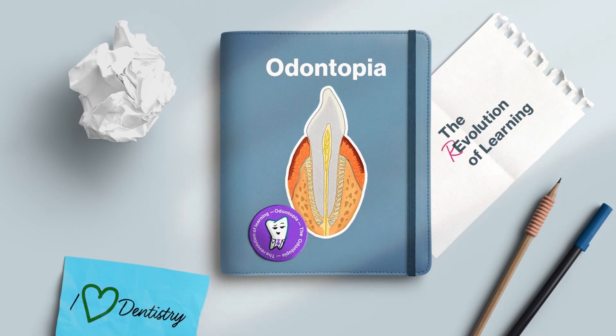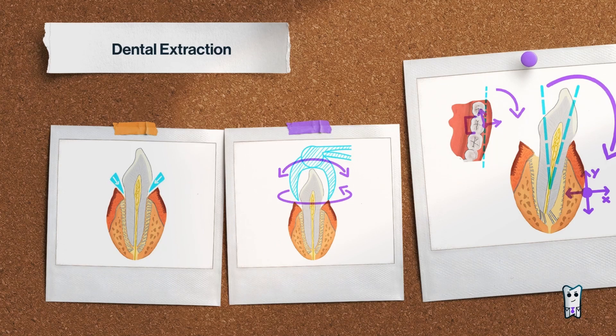Do you know what are the steps of closed extraction? I hope you do, but do you understand what is the idea behind syndesmotomy and what is the proper technique of traction? Dental extraction is a sequence of actions which lead to the expansion of the alveolus and tearing of the periodontal ligaments so the tooth can come out.